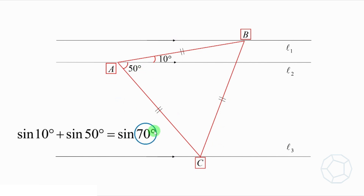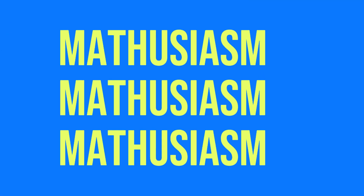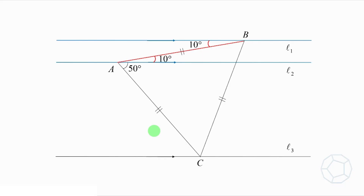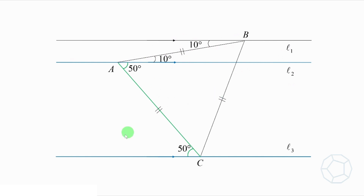But the next question is: where is 70 degrees? First of all, we look at the two red angles. Both of them are 10 degrees because they are the alternate angles of the two parallel lines L1 and L2. Next, let's look at the two green angles. Considering the two parallel lines L2 and L3, likewise, they are both 50 degrees.